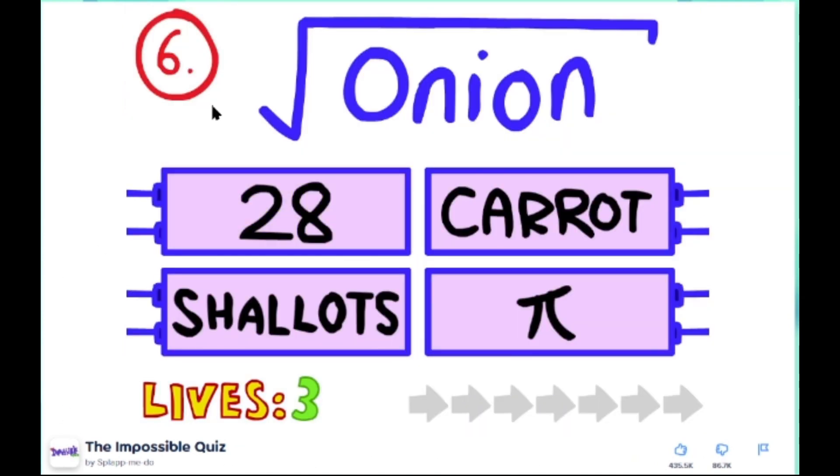Pretty easy. Onion, onion. Oh, Onion, okay. What's a shallot? 28, egg, pie, carrot. It's gotta be carrot because I like carrots. What's a shallot? Okay, let's go.